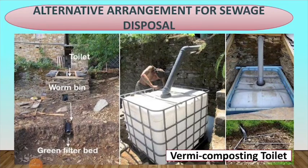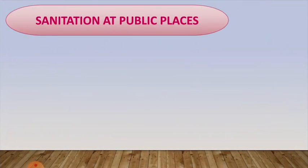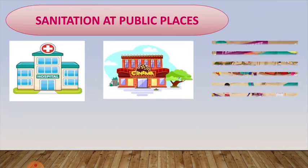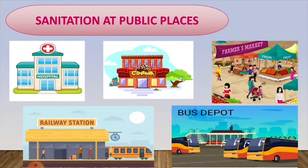Sanitation at public places: a large number of people visit public places like hospitals, cinema halls, markets, railway stations, or bus depots, so a large amount of waste is generated at all these places every day. If the waste produced at public places is not disposed of regularly and properly, it can result in the spreading of diseases. It is the responsibility of the municipality of the area to maintain sanitation at public places.